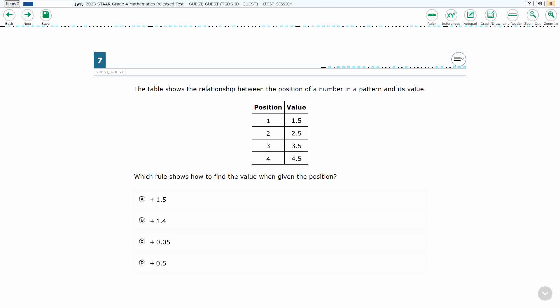So we have a table here showing the relationship between the position of a number in a pattern and its value. We've got first, second, third, and fourth position and then we have their value here.